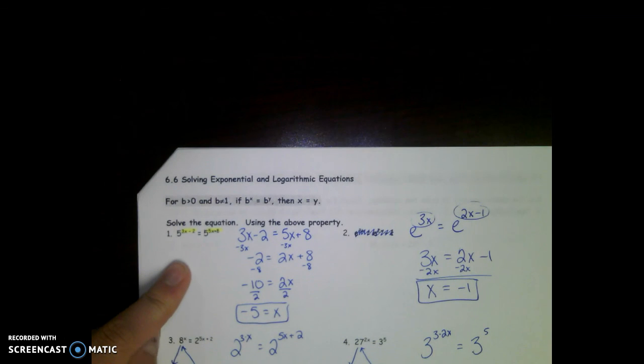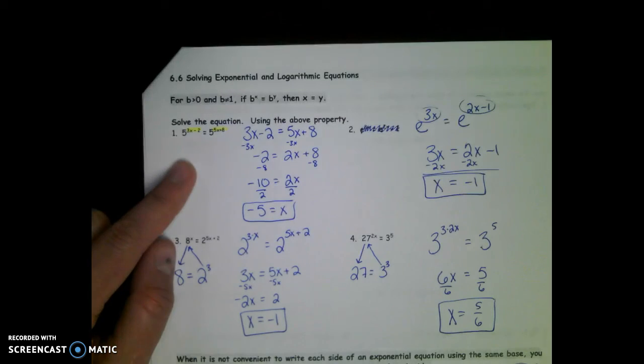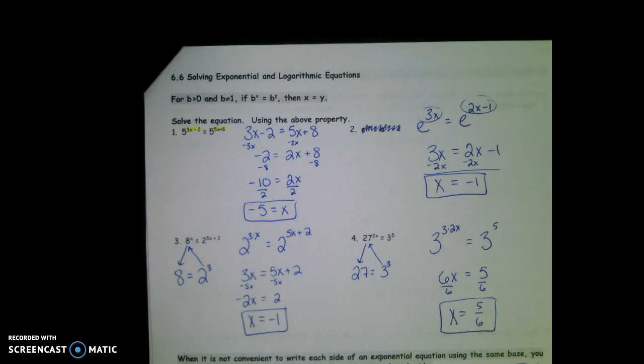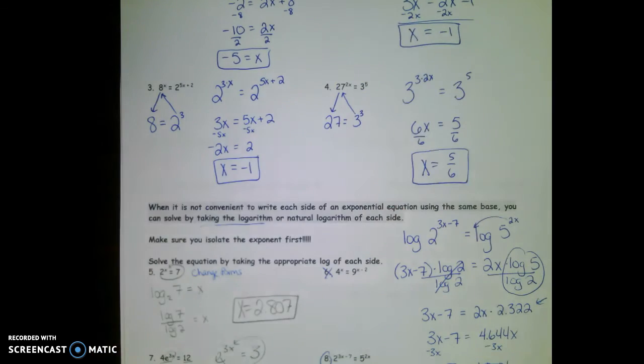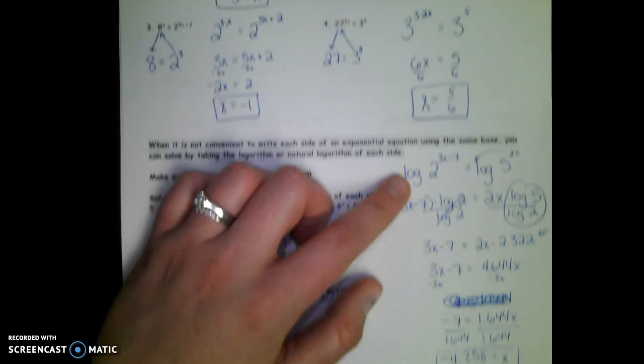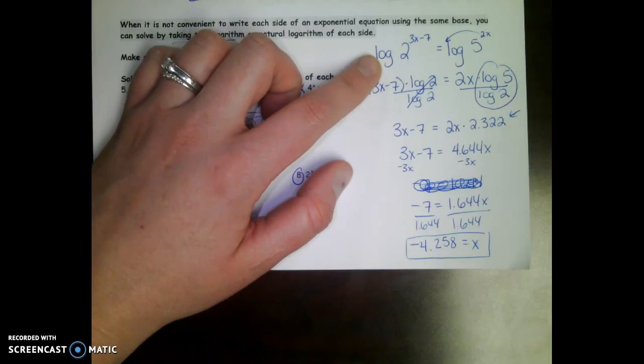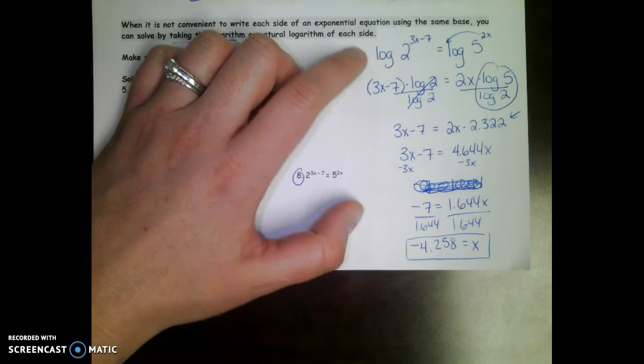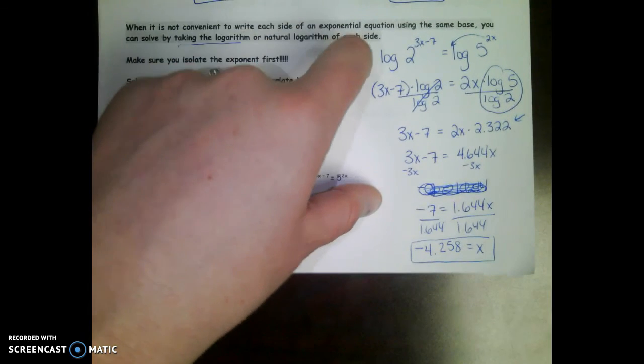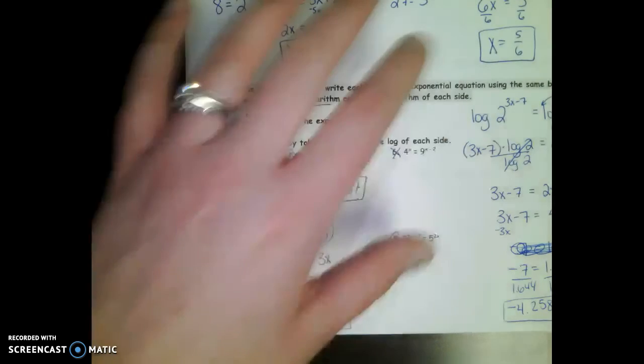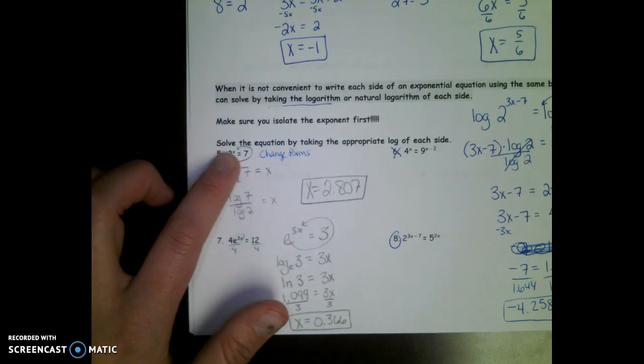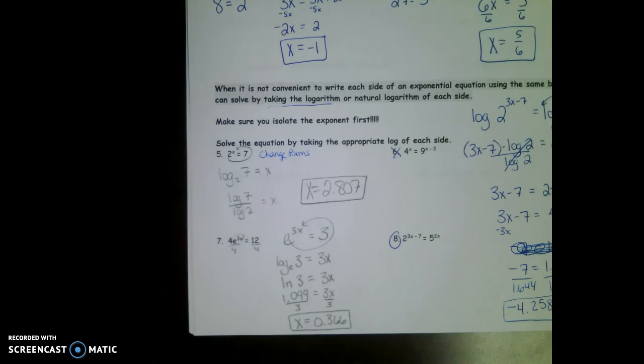So to recap, if you have exponents on both sides, get the bases to match and then the exponents are equal. If you can't get the bases to match, that's when you have to take the log of both sides. That's the more difficult problem. I'm not going to give you very many of those. If you only have an exponent on one side, then get that thing with the exponent by itself, change forms, and then evaluate the log and finish solving.